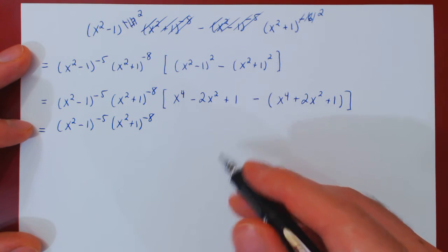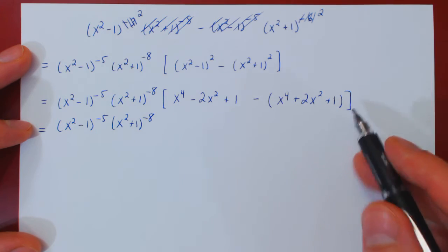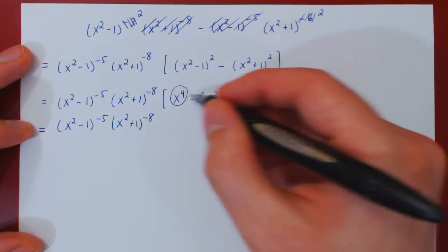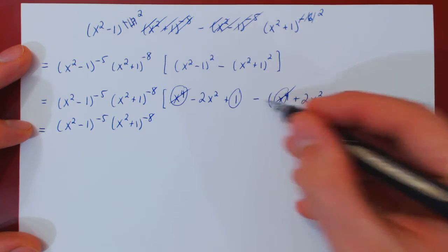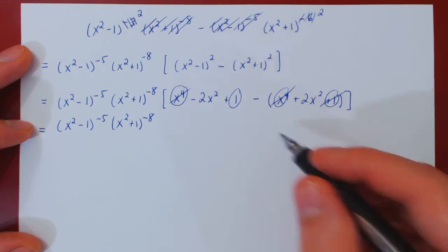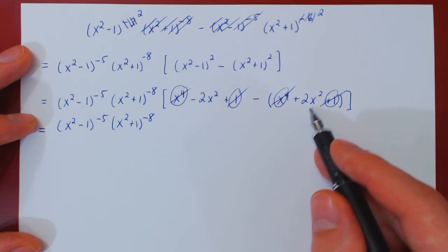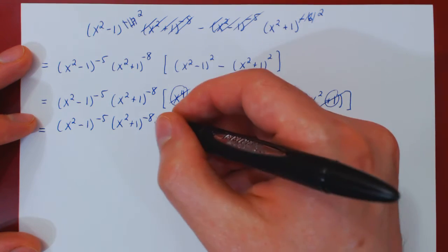And if you look, there's some nice cancellation taking place. x to the 4 minus x to the 4, this cancels. 1 minus 1 cancels. And we're left with negative 2x squared, negative 2x squared. This is negative 4x squared.